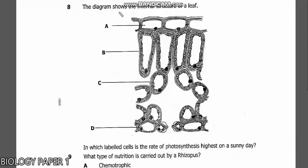Question 8 says the diagram shows the internal structure of the leaf, A, B, C, and D. In which labeled cells is the rate of photosynthesis highest on a sunny day? All these can photosynthesize, but which one has the higher rate of photosynthesis on a sunny day?